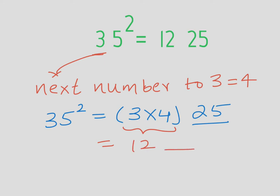So this gives us 3 times 4 is 12. So 12 and 25 in front. So that means the square of 35, we will write it as 35 square is equal to 1225.